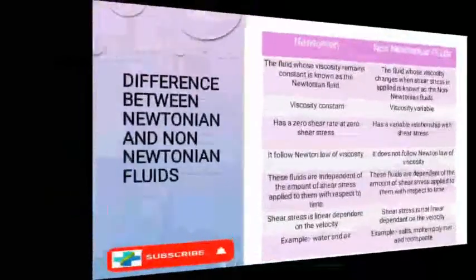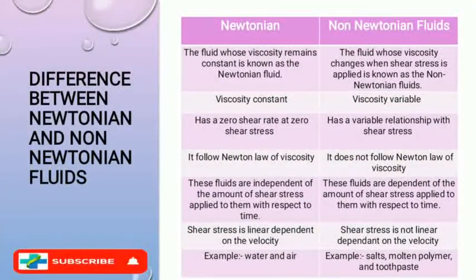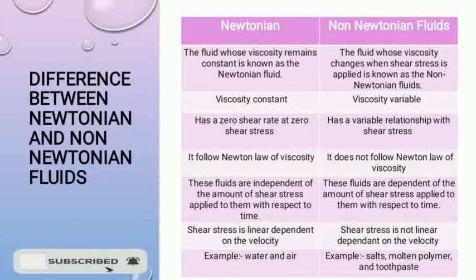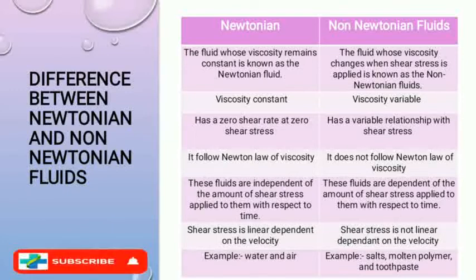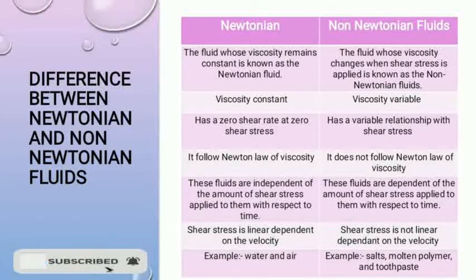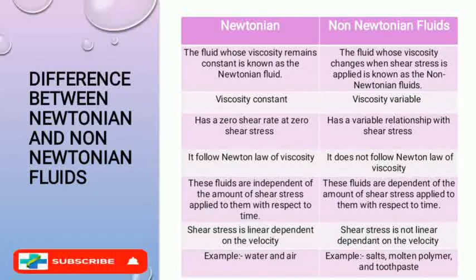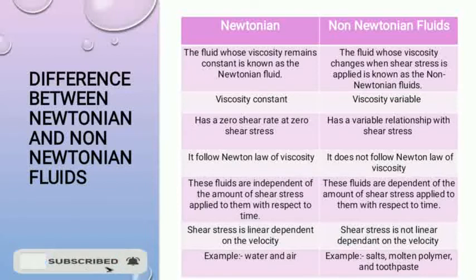Now for the differences between Newtonian and non-Newtonian fluids. First, a Newtonian fluid has constant viscosity, whereas a non-Newtonian fluid's viscosity changes when shear stress is applied. Newtonian fluids have a zero shear rate at zero shear stress, whereas non-Newtonian fluids have a variable relationship with shear stress. Newtonian fluids follow Newton's law of viscosity, whereas non-Newtonian fluids do not.